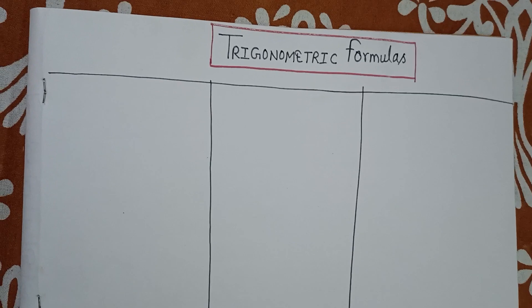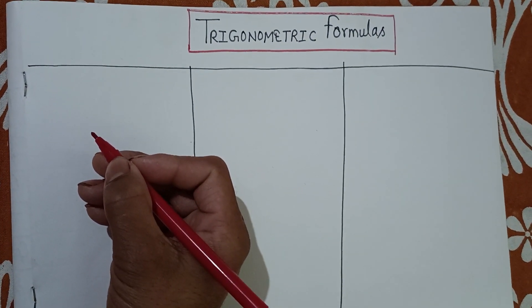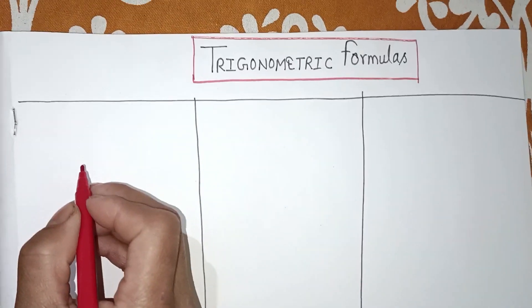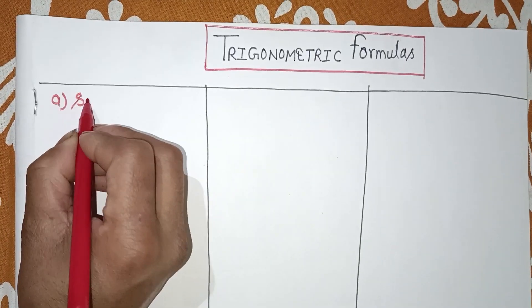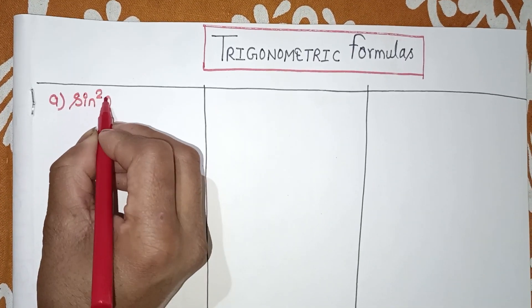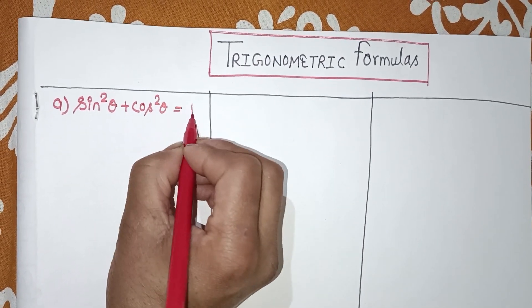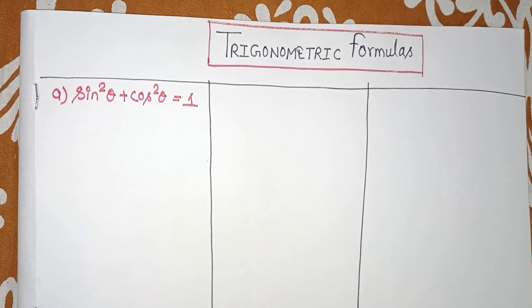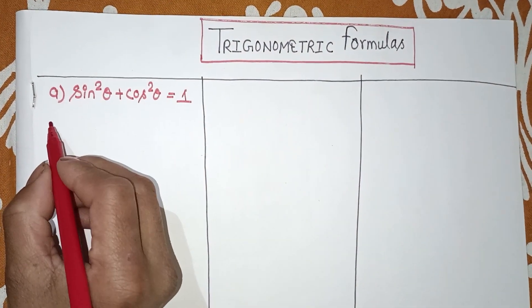When we are studying trigonometric formulas, if you haven't seen the previous video, please watch it first. So let's start. Our first basic formula is sin²θ + cos²θ = 1. Remember this formula — it's not tough, it's a simple formula. sin²θ + cos²θ = 1. We don't want to waste a lot of time, so we move to the next formula.